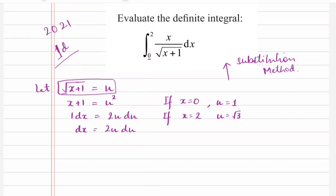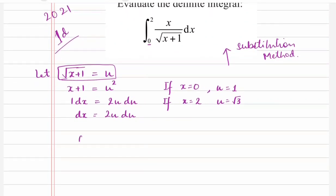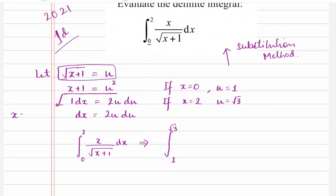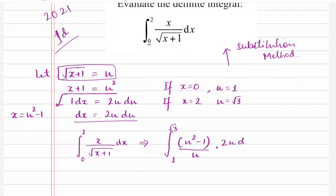Now let's substitute those values into the integral. We have the integral from 0 to 2 of x over root(x+1) dx. Converting to u form, it becomes the integral from 1 to root 3 of (u squared minus 1) over u, times 2u du, since x equals u squared minus 1.